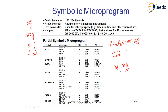Every time we perform an operation, we need to check how the operand is available — either in direct address or indirect address. In indirect address, two memory accesses are required. In direct address, only one memory access is required, and the microprogram itself performs that one memory access.